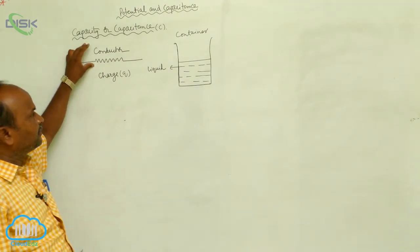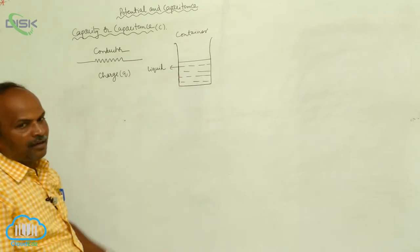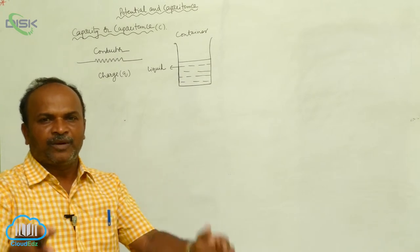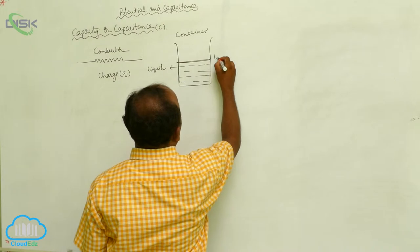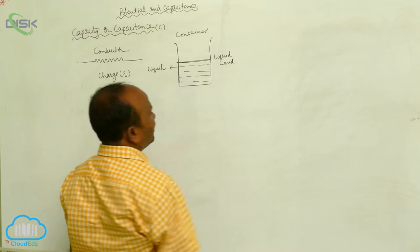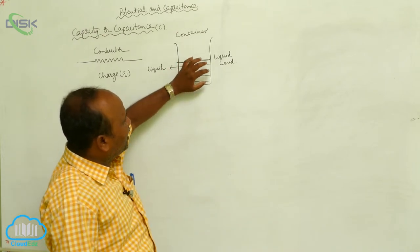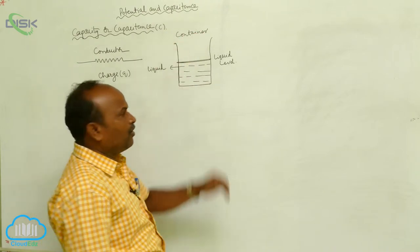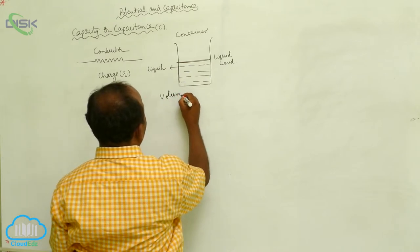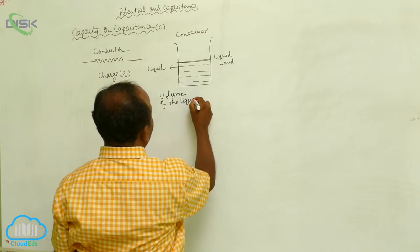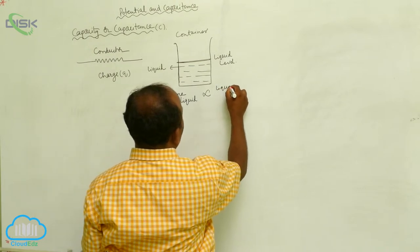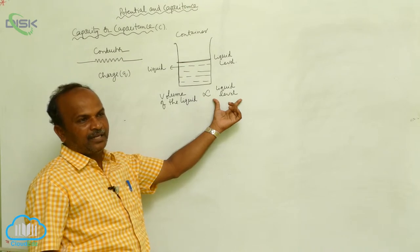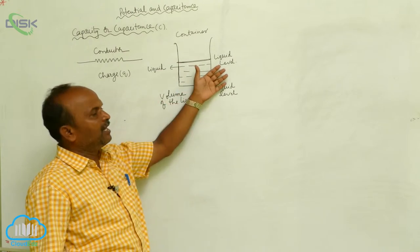There is a charge on the conductor. Similarly, there is liquid inside the container. Whenever liquid is in a container, there is a volume of liquid. Corresponding to that volume, there is a liquid level. As the volume of the liquid is less, the liquid level is less. As the volume of the liquid is more, the liquid level is also more.